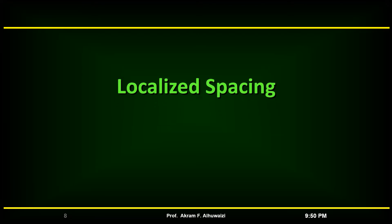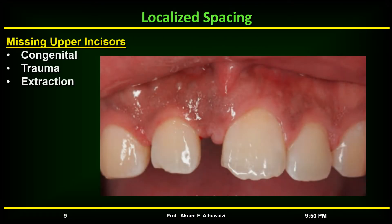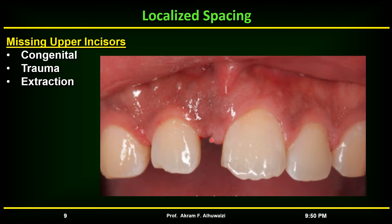Concerning localized spacing, it may be due to hypodontia or loss of a tooth as a result of extraction or trauma. This problem is most noticeable if an upper incisor is missing, because of the asymmetry generated which is very noticeable to the eye.